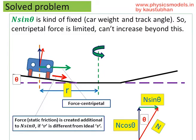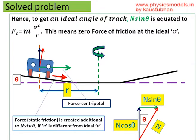And that's why it's important to talk about the ideal angle of track or the ideal speed. So we are going to equate N sin theta itself to the m v squared by r which is the centripetal force so that we are not depending upon friction to keep the car in place.